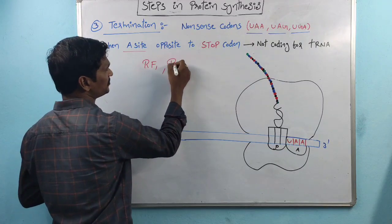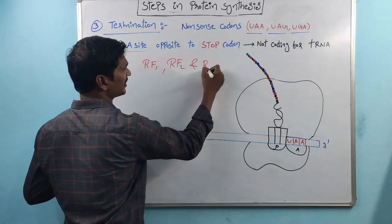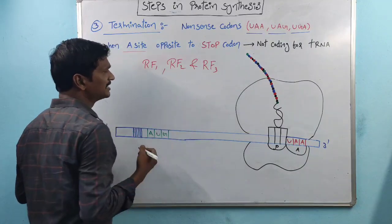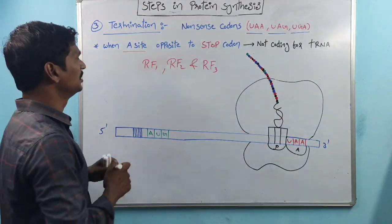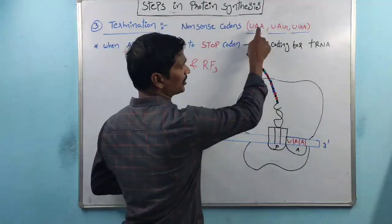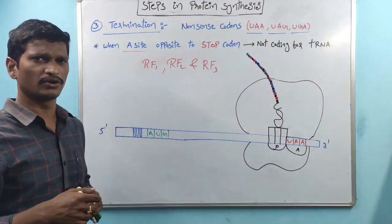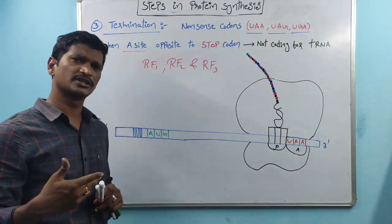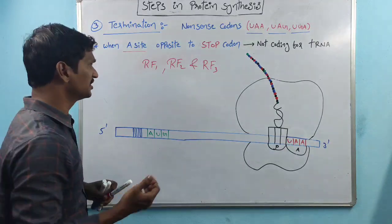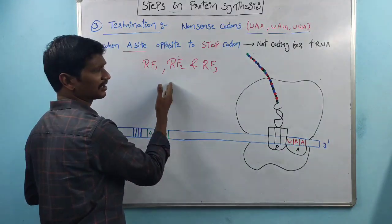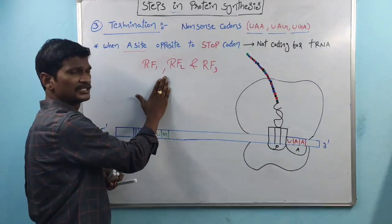These 3 nonsense codons code for the releasing factors: RF1 (releasing factor 1), releasing factor 2, and releasing factor 3. These are coded by nonsense codons, whereas sense codons code for tRNA. Non-sense codons code for releasing factors.